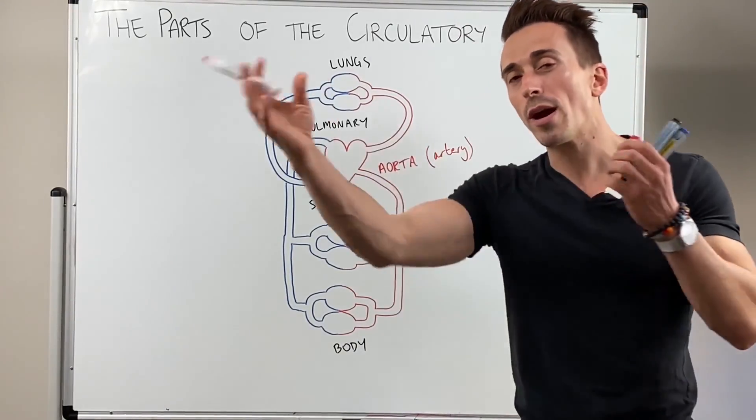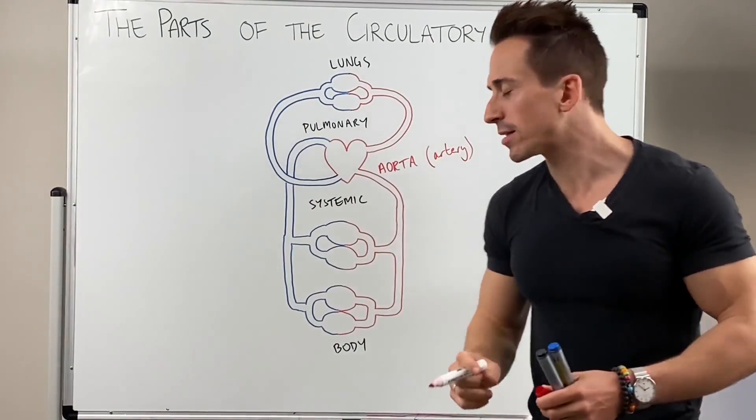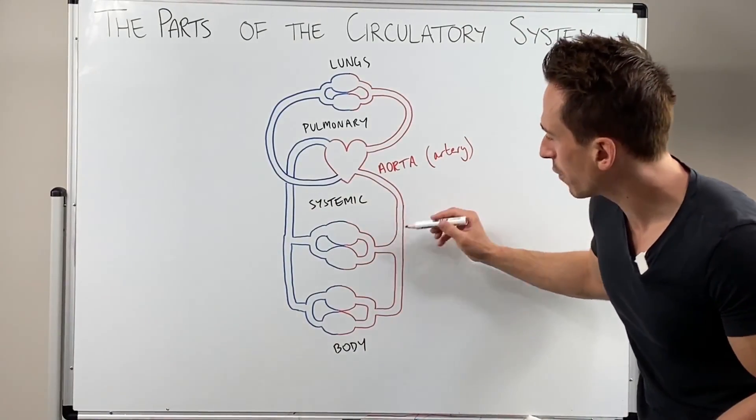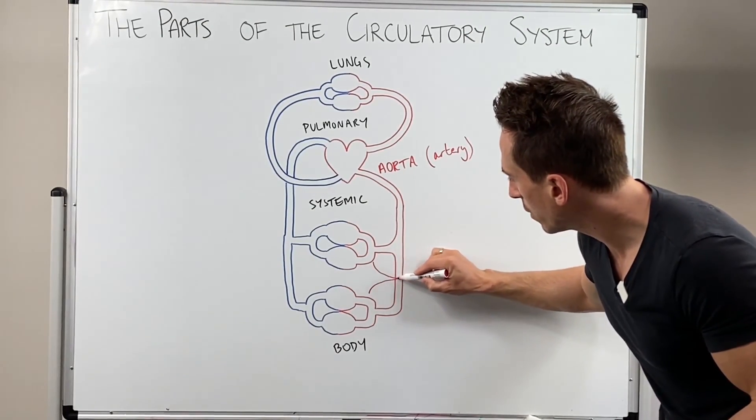Now once it branches and branches and branches and the blood vessels get smaller, you then turn into something called arterioles. So what we're going to find for example is that these are arterioles.